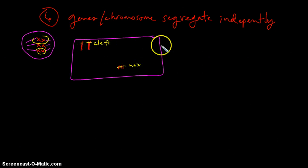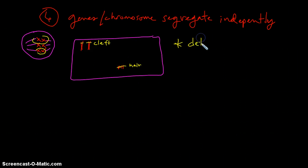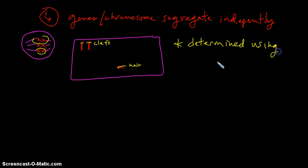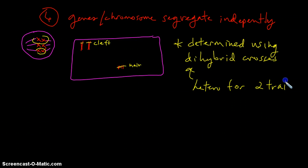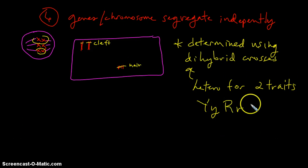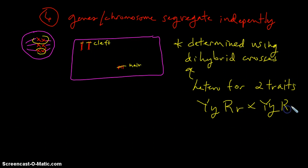Now, he was able to determine this with dihybrid crosses. When we say dihybrid crosses, that means they are heterozygous for two traits. We could use an example like to say big Y, big R, or big Y, little Y, big R, little R. So this is a dihybrid cross would be between two individuals heterozygous for two traits of interest.